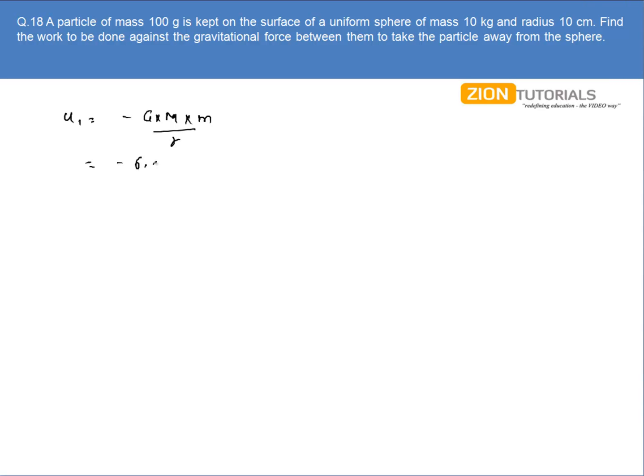Substituting the values, I have 6.67 into 10 to the power minus 11 into mass that is 0.1 kg into 10 divided by the distance between them that is again 0.1. So the initial gravitational potential energy comes out to be minus 6.67 into 10 to the power minus 10 joules.